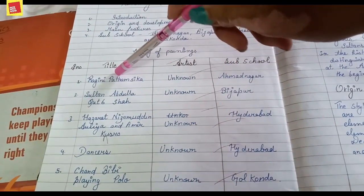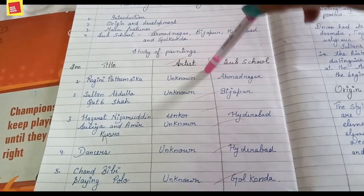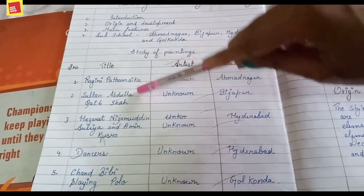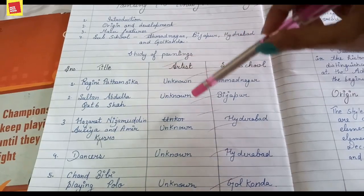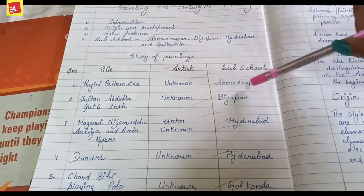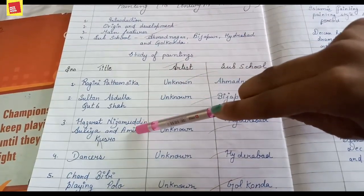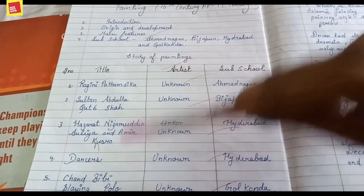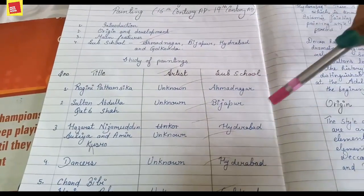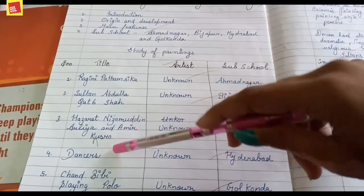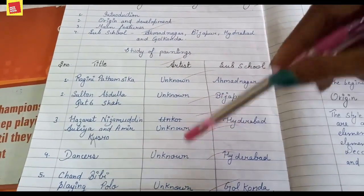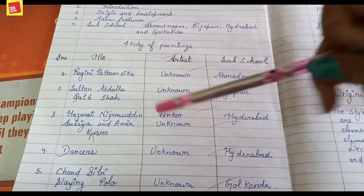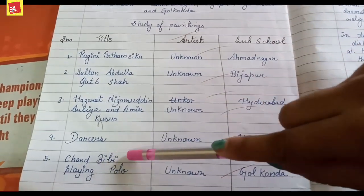The first painting has an unknown artist and belongs to the Ahmednagar sub-school. The second painting is 'Sultan Abdullah Qutub Shah,' artist unknown, from the Bijapur sub-school. The third painting is 'Hazrat Nizamuddin Aulia and Amir Khusro,' artist unknown, from the Hyderabad sub-school. The fourth painting is 'Dancers,' artist unknown, also from Hyderabad — so the Hyderabad sub-school has two paintings.